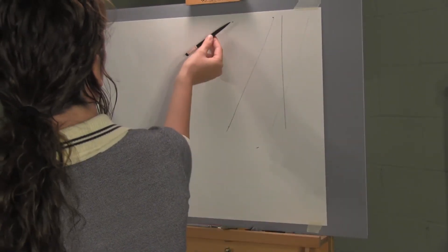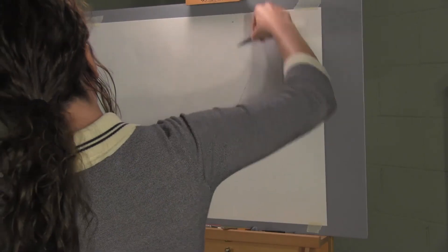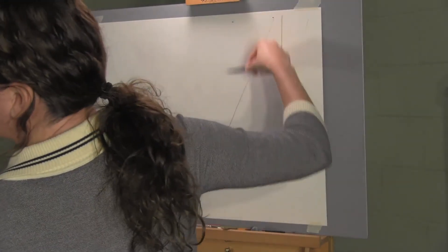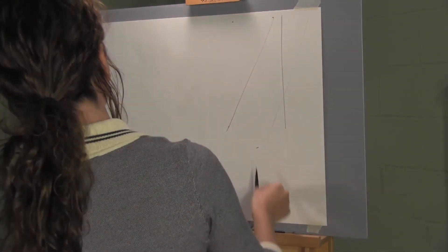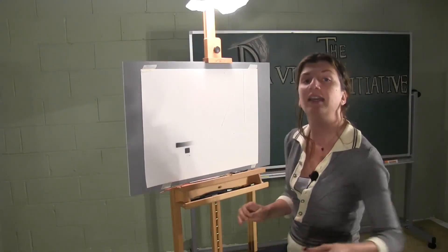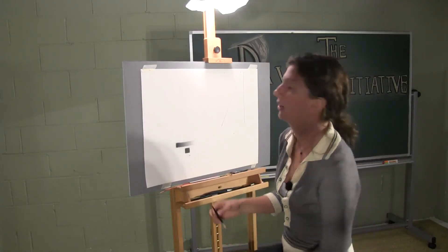I don't want to hold my charcoal like this or like this to do it. If I actually align my charcoal at the same angle of the line I'm trying to make, it will help me be successful in drawing a straighter line.